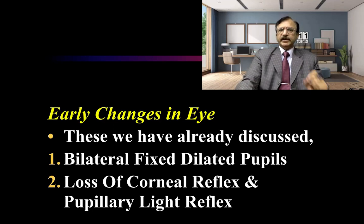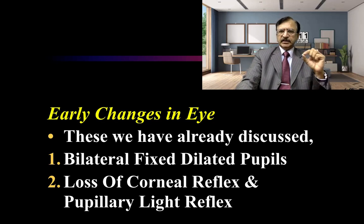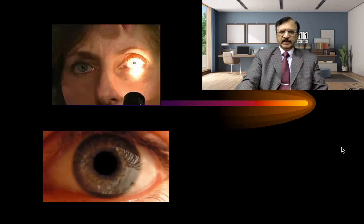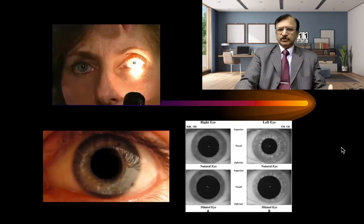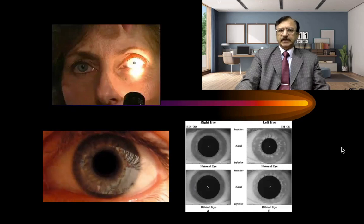Then there is loss of corneal reflex — when we touch the cornea with a thread or fiber, the eyes will normally blink, but this will not be seen after death. This picture shows that when light is thrown in a living person, the pupil constricts and dilates, whereas in death there is the fixed dilated position which does not respond to light.